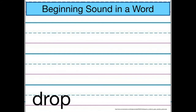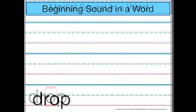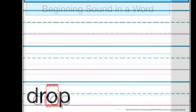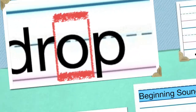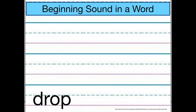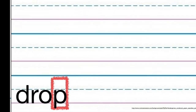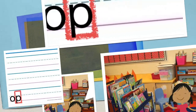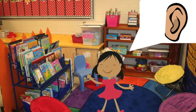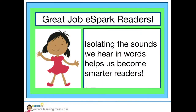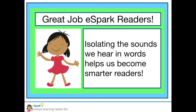What do you hear next in the word? What letters make that sound? The short O makes the middle sound of the word. What sound do you hear at the end of the word? What letter makes that sound? P — that's right. Great job, eSpark readers. You use your ears to uncover the different parts of a word that create certain sounds.